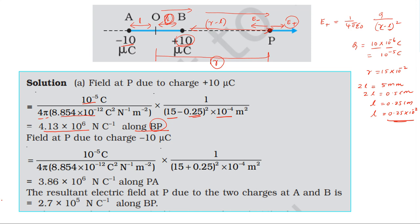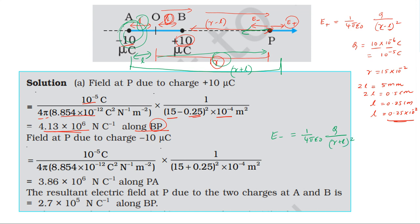The electric field at point P due to the negative charge is directed from P toward A. Using the formula E = (1/4πε₀) × Q / (R + L)², where the distance from point A to point P is R plus L, the answer comes out to 3.86 × 10⁶ newton per coulomb.